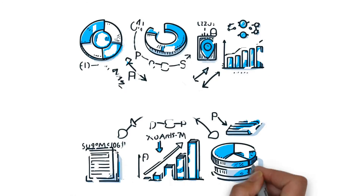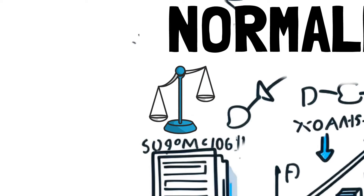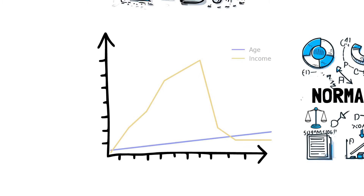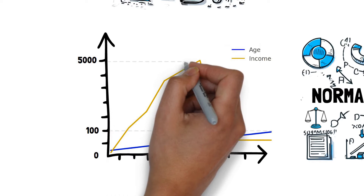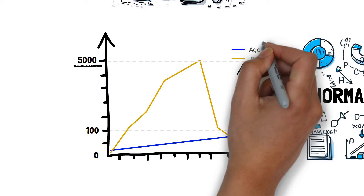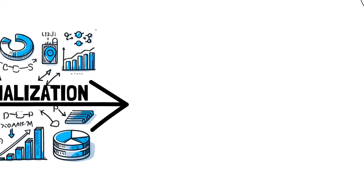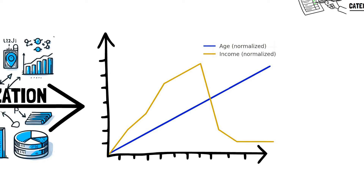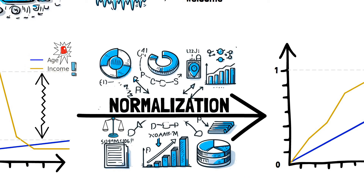Once we've prepared our datasets, we often also want to perform an additional step: normalization. This refers to the process of standardizing the range and scale of the data points in our dataset. Imagine a dataset that contains age, ranging from 0 to 100, and income, possibly ranging from thousands to millions — these two features have vastly different scales. By normalizing, we transform our data so that all input features, regardless of their original scale, have a consistent range, often between 0 and 1 or a mean of 0 and a standard deviation of 1. This ensures that no particular feature dominates the learning process solely due to its larger magnitude.